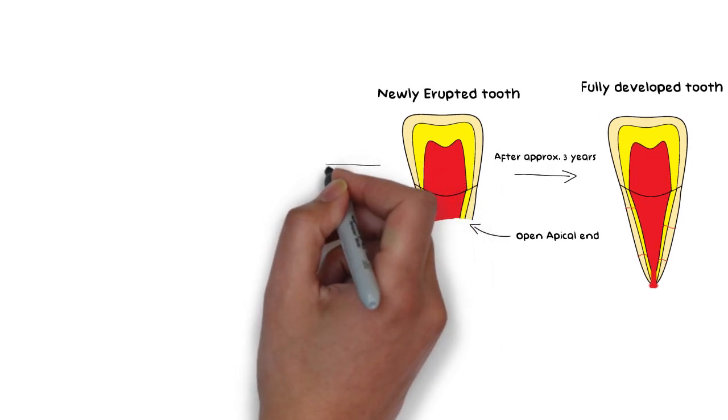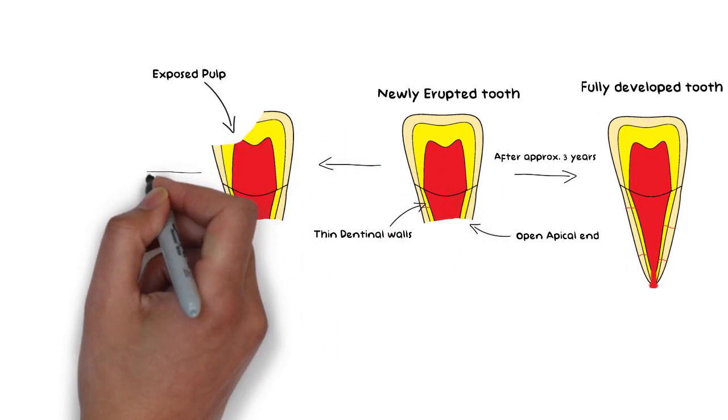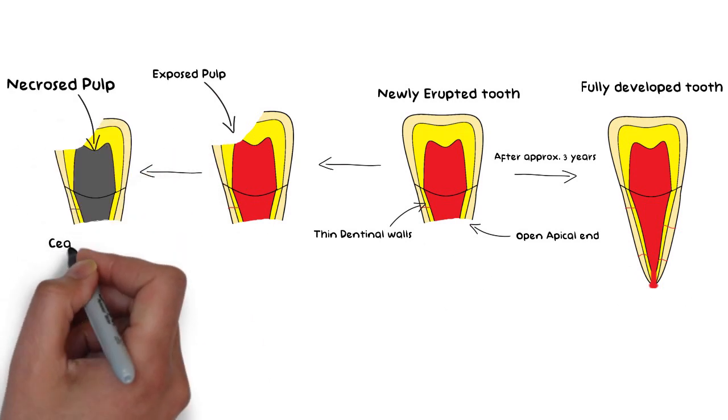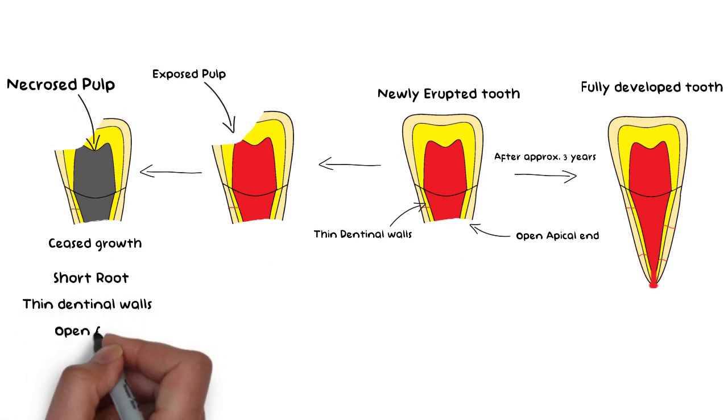When the pulp of such a tooth that is still undergoing root development is exposed to the environment and the pulp becomes necrosed, then the root dentine formation will cease and the root development will become arrested. The result will be a short thin root with thin dentinal walls and a comparatively large apex that lacks constriction, known as an open apex.